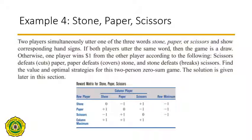In this example, we are going to look at the game of Rock-Paper-Scissors. Two players simultaneously say one of the three words: stone, paper, or scissors. If both players say the same thing, the game is a draw. Otherwise, scissors defeats paper, paper defeats stone, and stone defeats scissors. The player who wins gains one dollar. This is the reward matrix for the game. The row player has three possible strategies — stone, paper, and scissors — and the column player has the same three strategies.